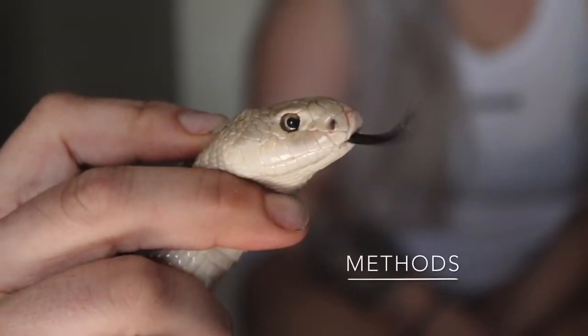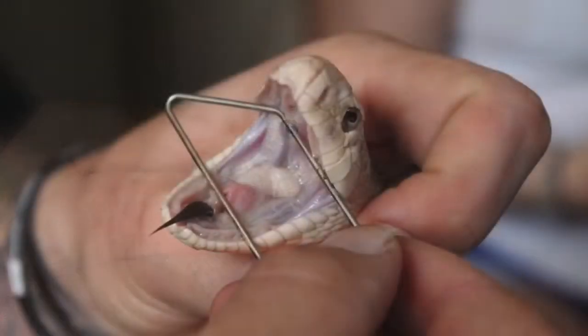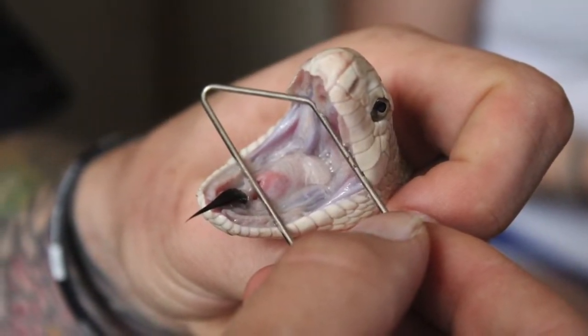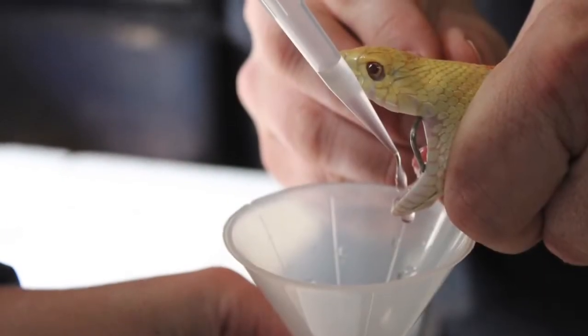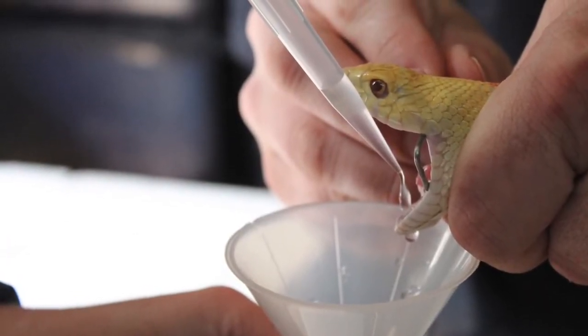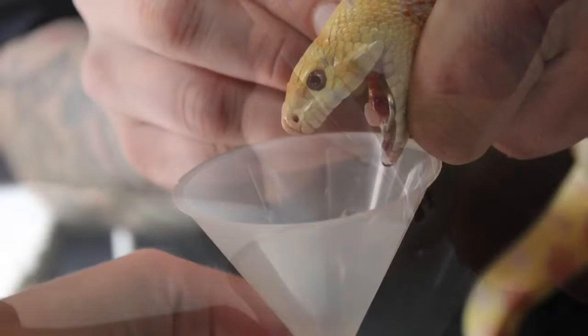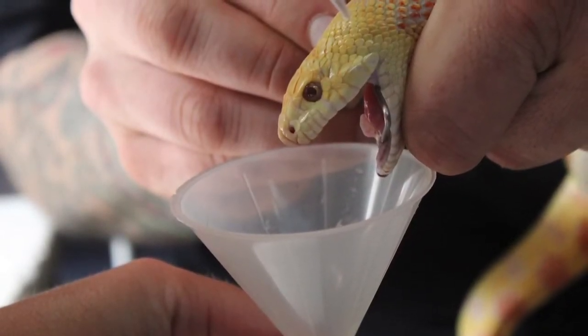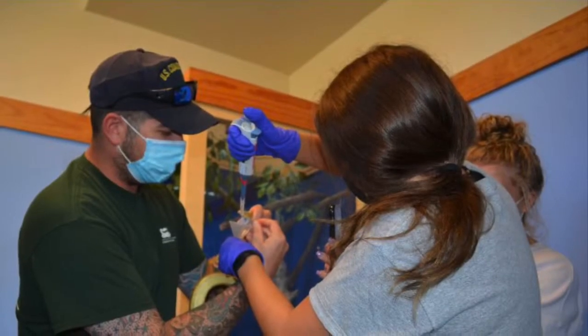To begin our project, we first needed to collect saliva samples from a number of different non-venomous snakes. To collect each saliva sample, we opened the mouth of the snake with a specular mouth prop as pictured here, then sprayed one milliliter of deionized water into the mouth of the snake and then collected the liquid as it dripped out of the mouth.